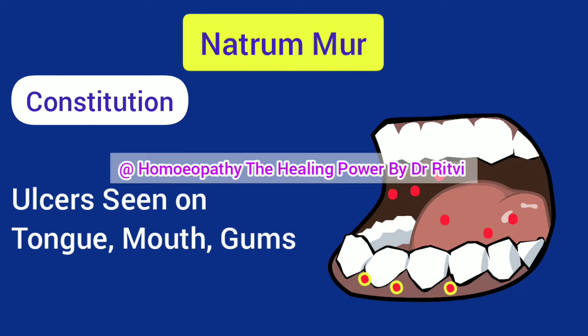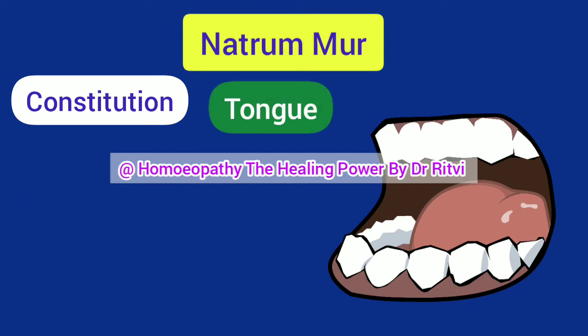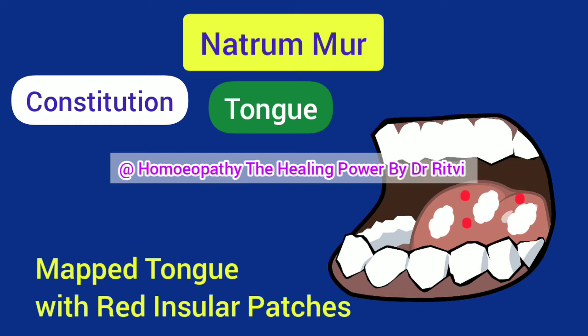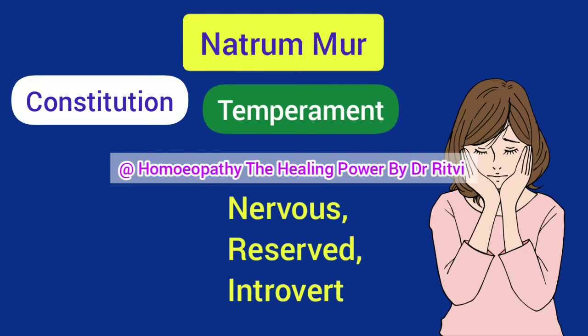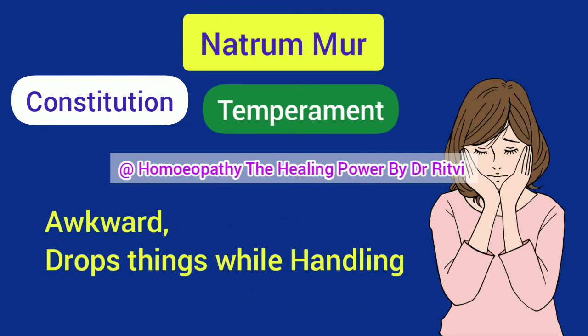The deterioration of blood produces a number of symptoms. Ulcers are seen on the tongue, mouth, and sometimes on the gums, with swelling of the gums. The patient generally suffers from anemia. There is a very typical mapped-like appearance of the tongue, which is a most important keynote symptom helping to identify Natrum Mur. The patient has a nervous temperament — nervous, reserved, and very introvert — and is also awkward and hasty, dropping things from the hand. Natrum Mur patients are hot patients and cover a scrofulous diathesis.